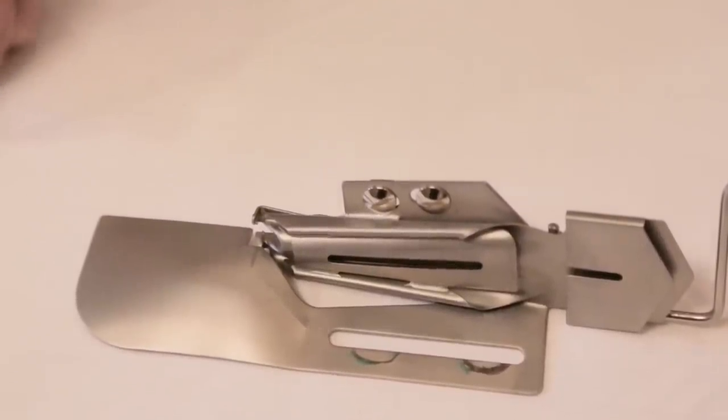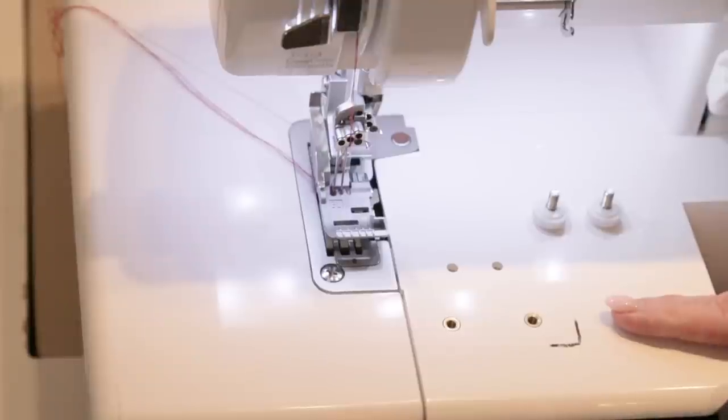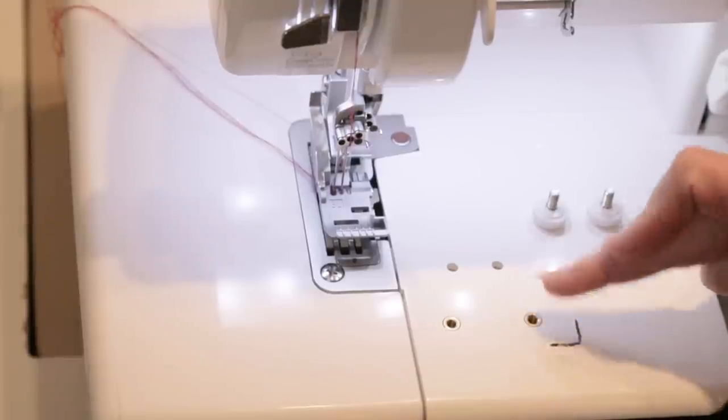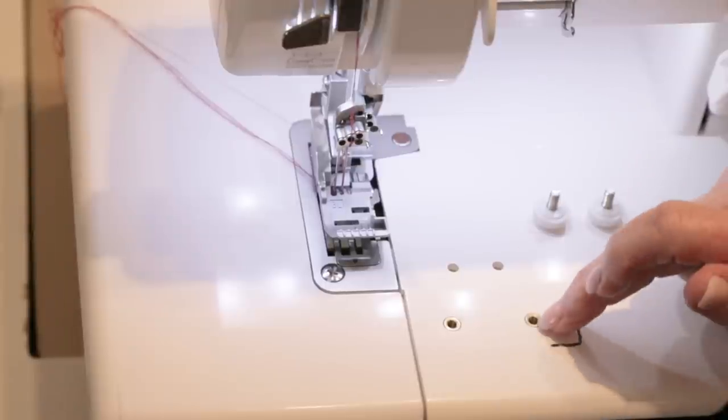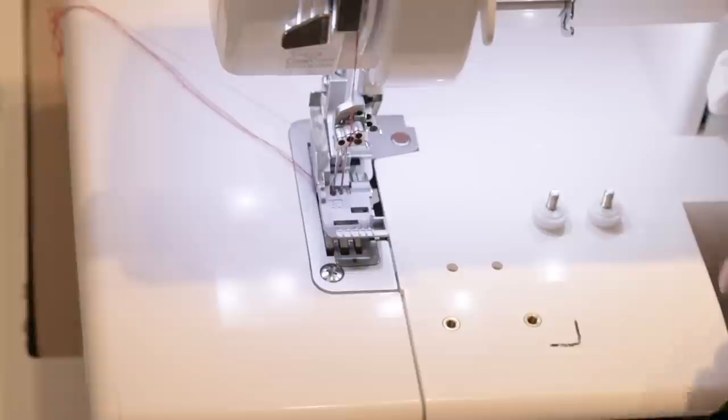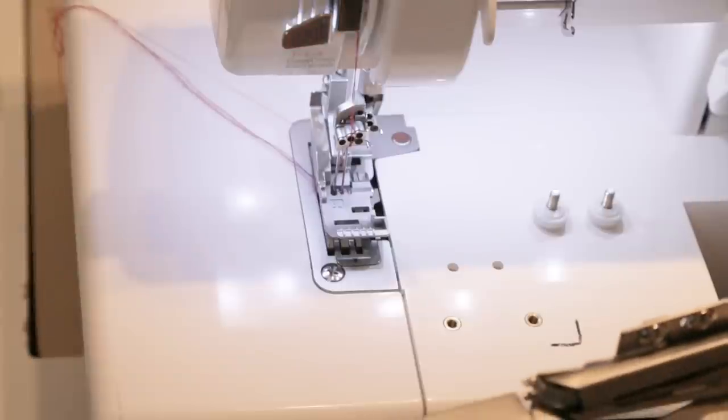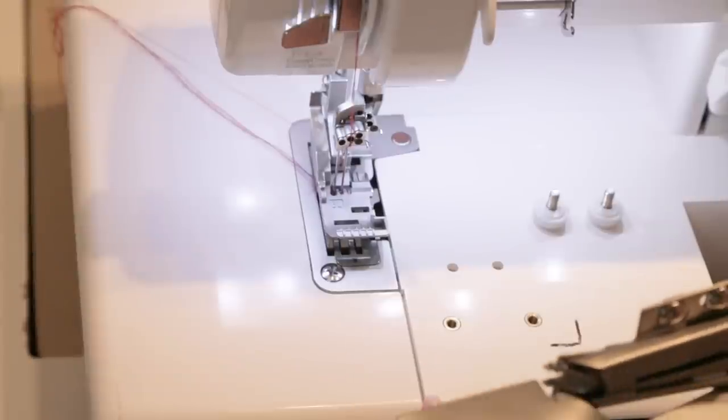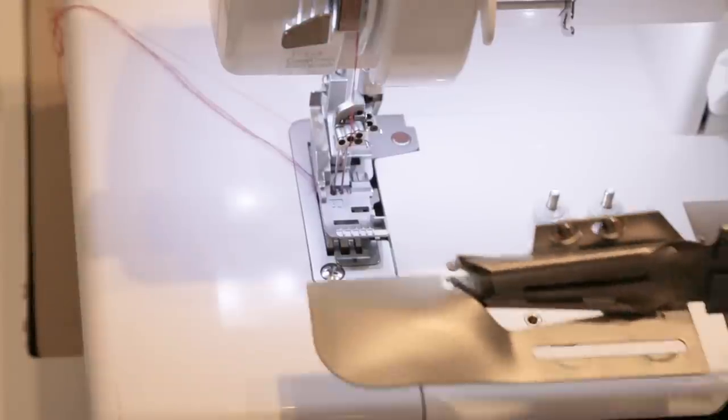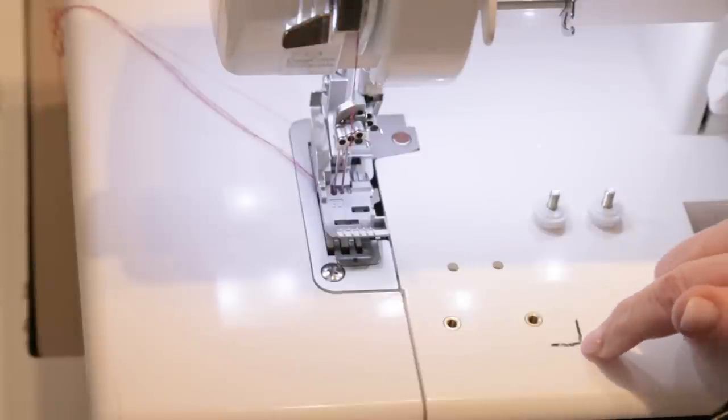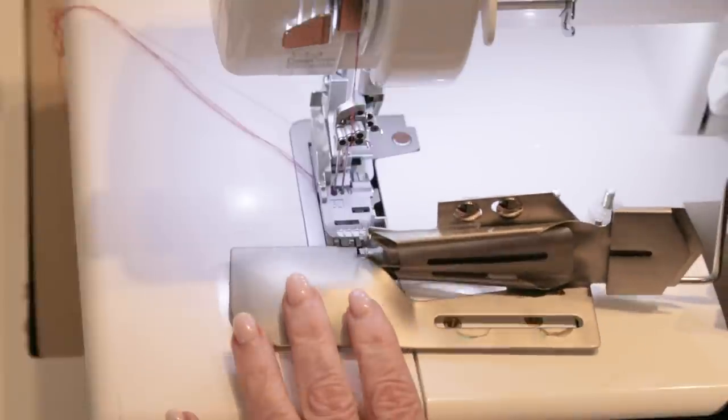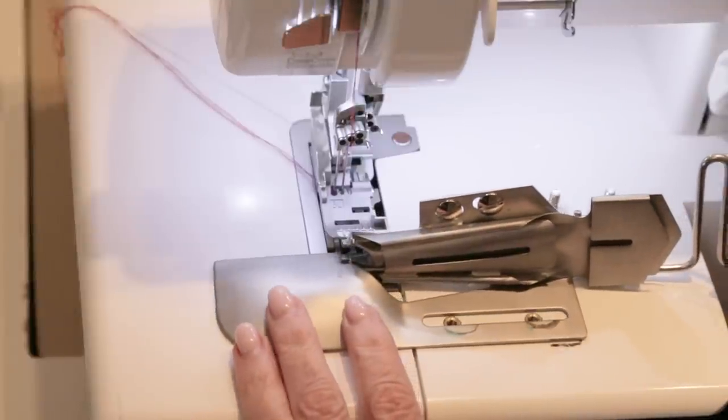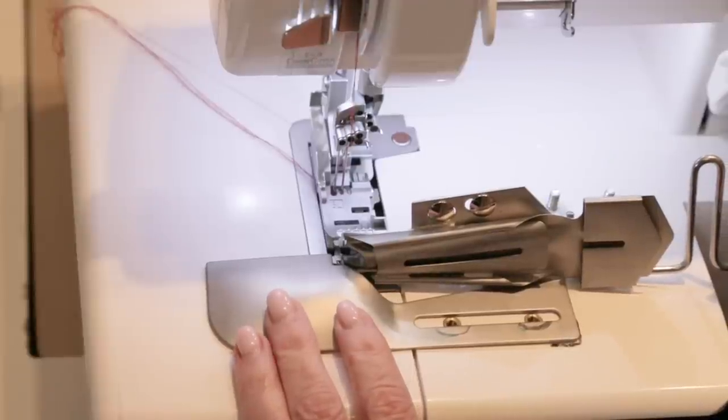We're at the machine and I have my cover hem table on. This one has two sets of screw holes, and it's the ones toward the front that I'm going to be using for this binder attachment. Depending on what kind of machine you have, you may have a little adapter that you put on your cover hem table for the binder. I have a little angle marked again with my sharpie marker.